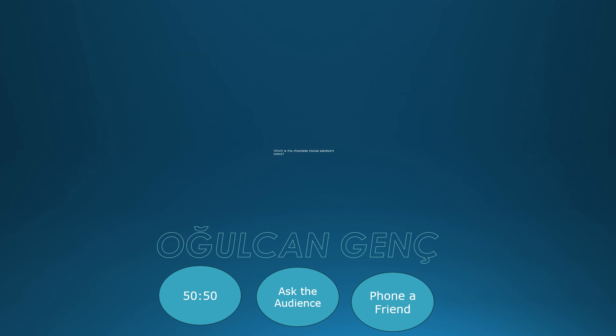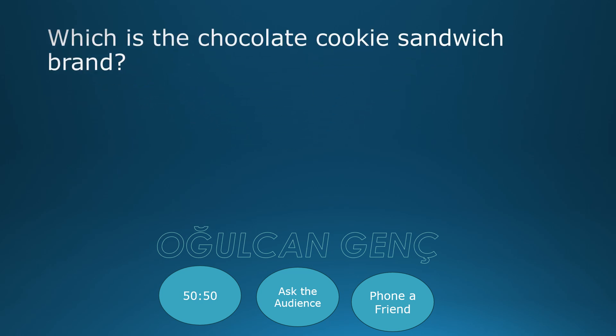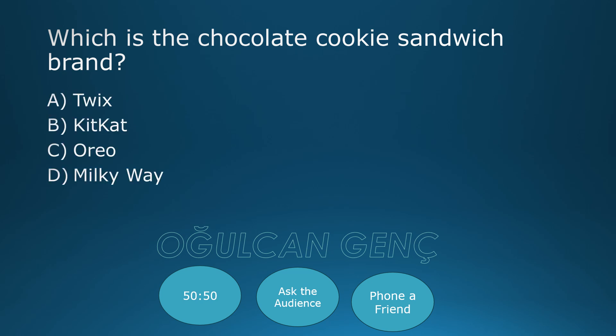Which is the chocolate cookie sandwich brand? Twix, Kit Kat, Oreo, Milky Way. Correct answer: Oreo, C.